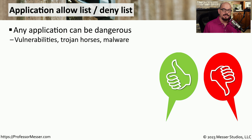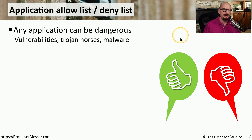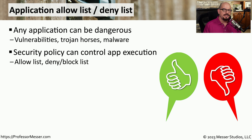Another form of segmentation is based on the applications you use. Many operating systems allow you to create an application allow list and deny list. Organizations use these lists to ensure that only legitimate applications can be used on those systems, blocking any other app — including malicious software such as Trojan horses, malware, and viruses. You would generally set a rule or security policy that would allow or disallow a particular application to run in that operating system.